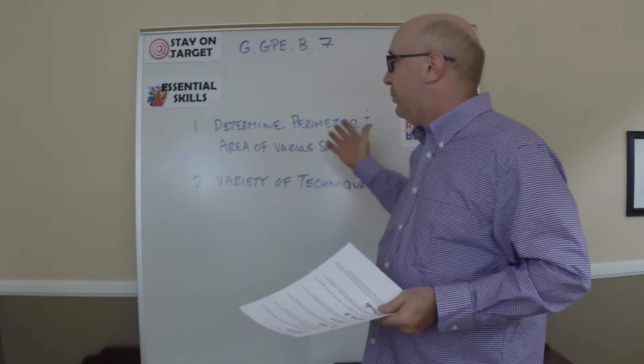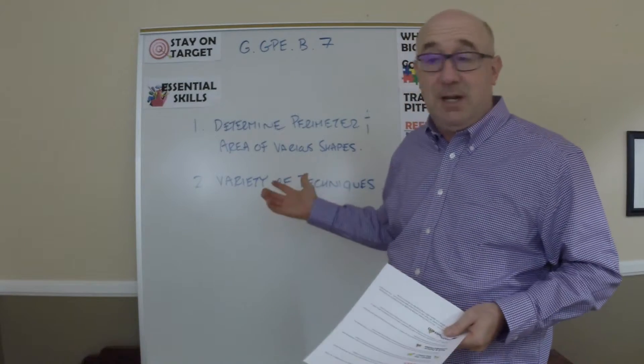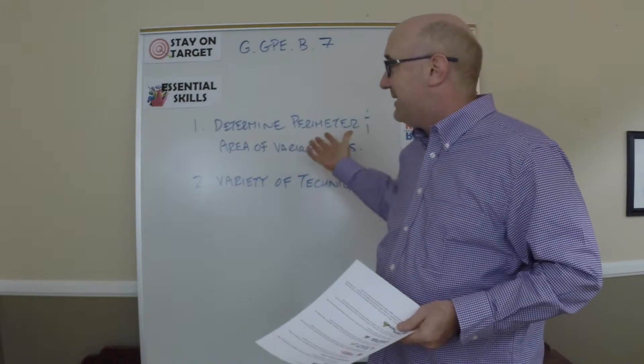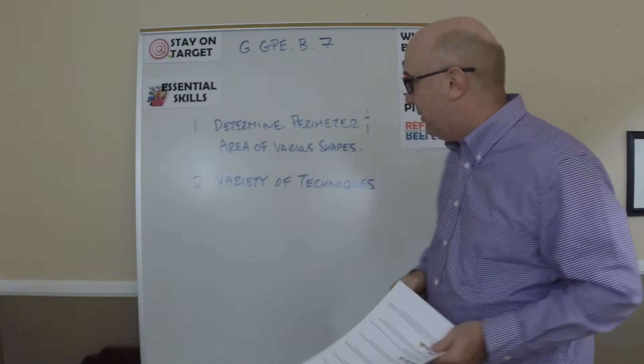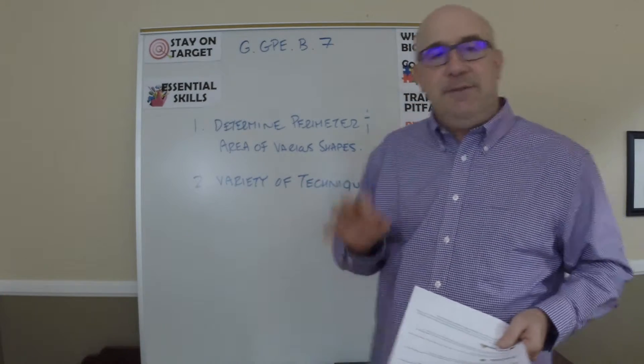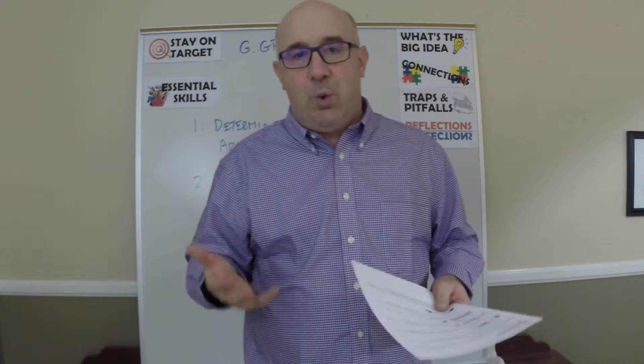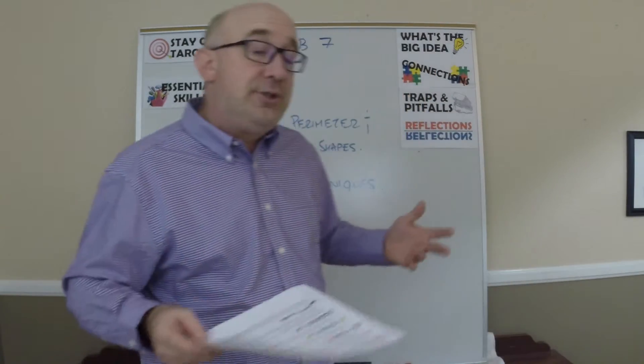We'll find perimeter and area using the distance formula and other techniques. Even though we've covered this before, it's a different look because we're on the coordinate grid. We may look at other shapes besides polygons.